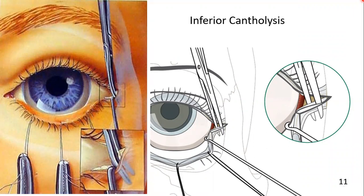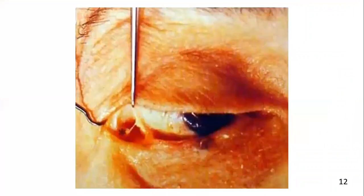This is known as inferior cantholysis. The scissors are introduced vertically to cut the tendon. Subsequently the lower lid is freed and can be retracted more effectively, swinging the lower lid outwards. When the cantholysis is complete, an immediate release of the lower lid from the lateral orbital rim is noted, and the surgeon will be able to evert the lower lid more effectively. In the previous picture the inferior limb was present; now it has been transected and removed.